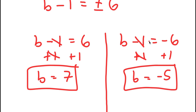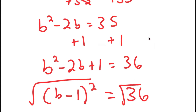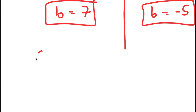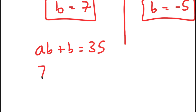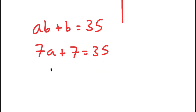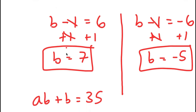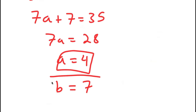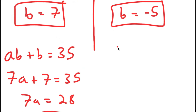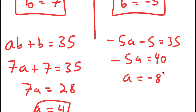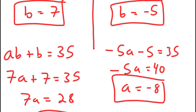So now I have to plug this back into the equation AB plus B equals 35. If B equals seven, I get 7A plus seven is equal to 35, meaning 7A is equal to 28 and A equals four. So if A equals four then B equals seven — this is one solution to my system of equations. And now if B equals negative five, I get negative 5A minus five is equal to 35, meaning negative 5A is equal to 40 and A equals negative eight. So if B equals negative five then A equals negative eight. So these are my two solutions.